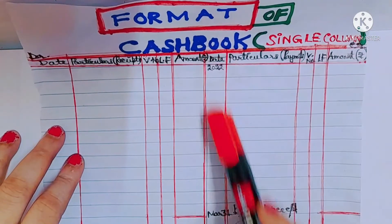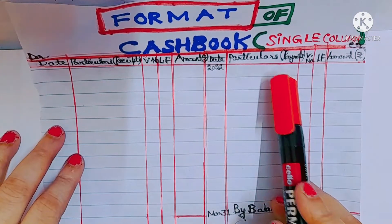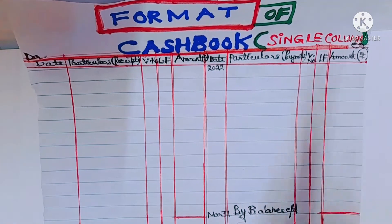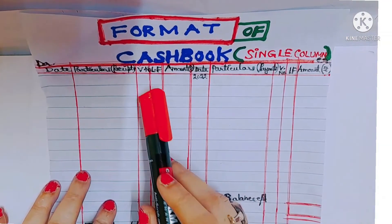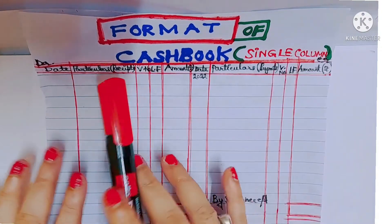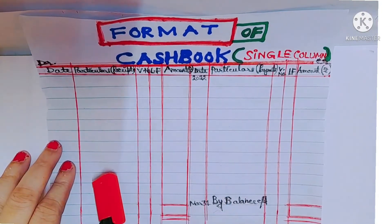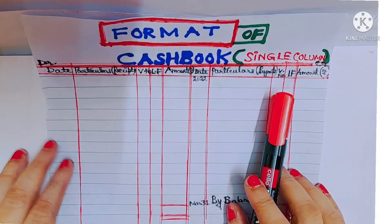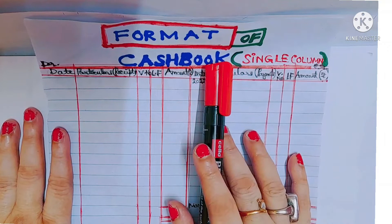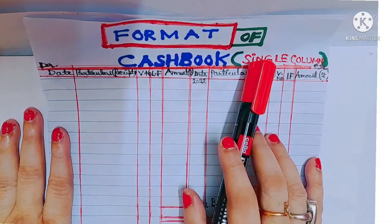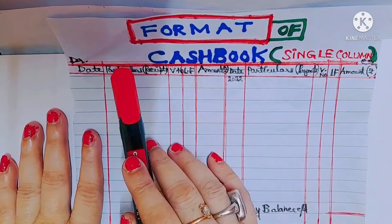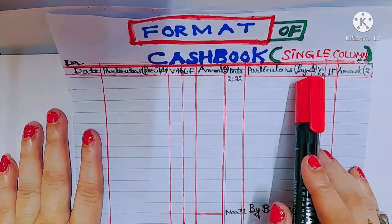For the credit side, same structure: date, particulars or payments, voucher number, ledger folio, and amount. The voucher number on the debit side means receipts number; on the credit side, it means payments number. All receipts are written on the debit side and all payments are written on the credit side. Cash book comes under real account — what comes in is debit, what goes out is credit.